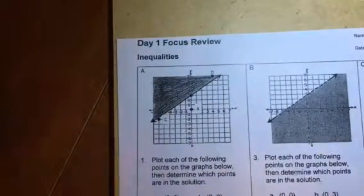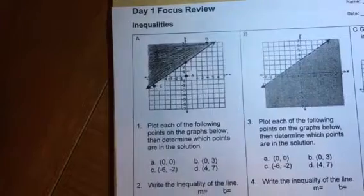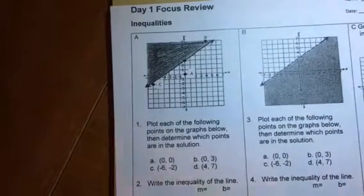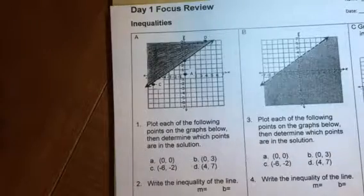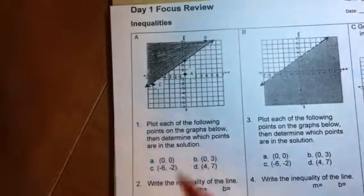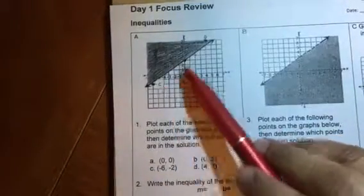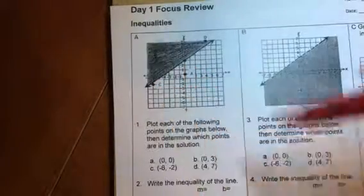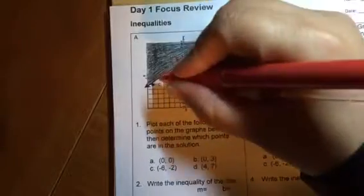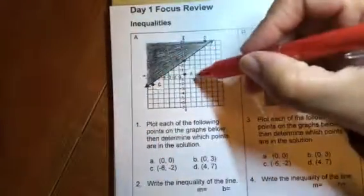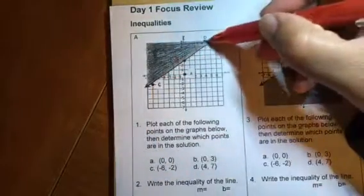On number one, it asks us to plot each of the following points on the graph below then determine which points are in the solution. Okay, so these points have actually been graphed for you. It's a little bit dark so you can't see some of them, but here's A, B, C, and D.